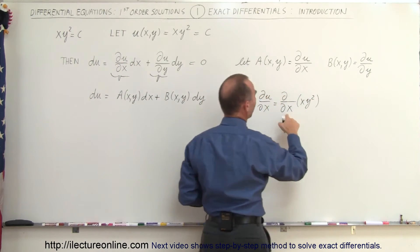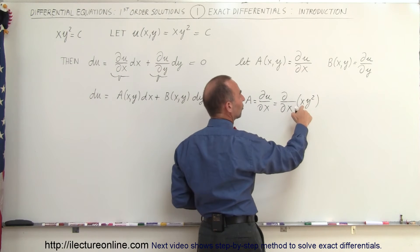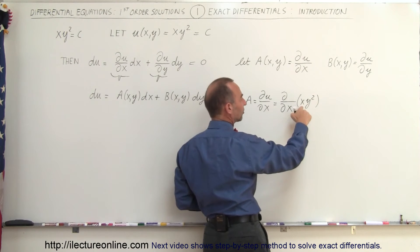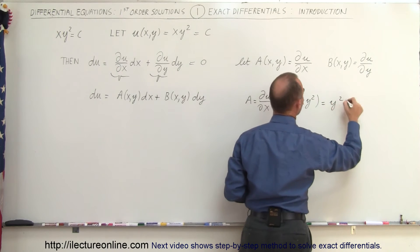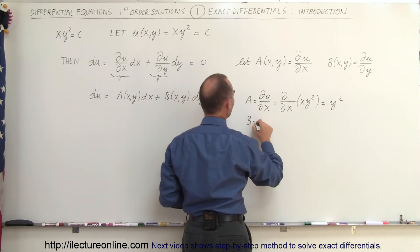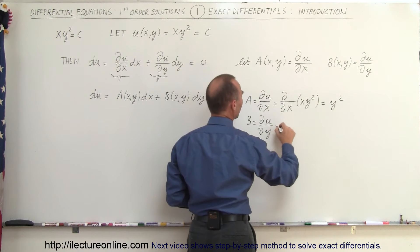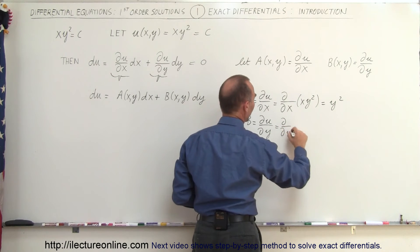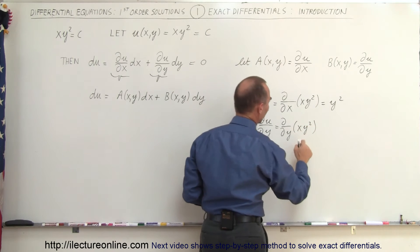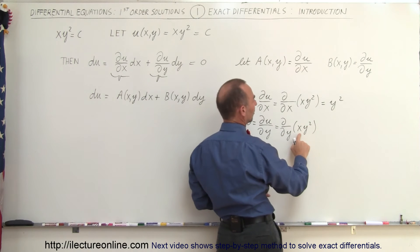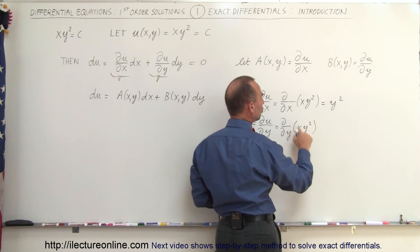When we do that, y is a constant, so this is simply the partial of x, which gives one times y squared. For b, which is equal to the partial of u with respect to y, that's the partial with respect to y of the quantity xy squared. So x becomes a constant — this is just the coefficient of y squared — so it would be 2xy.